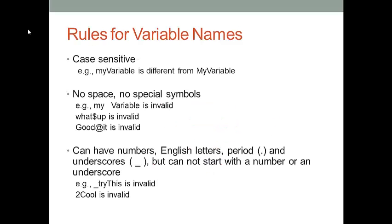Creating a variable is very simple in R, but we have to remember some rules when we create a variable name. First, variable names are case sensitive. For instance, if you have two variables in your program — myVariable and MyVariable — in R they are considered different, because the M in the first is lowercase and the M in the second is uppercase.